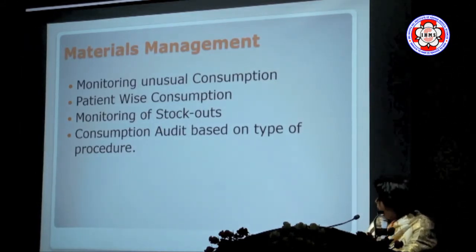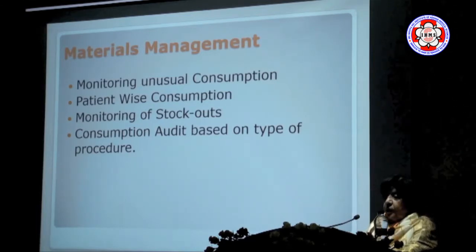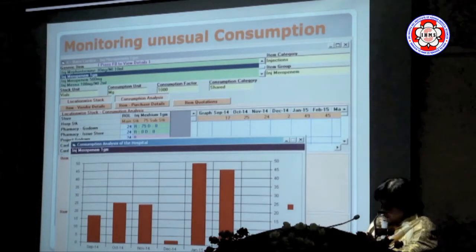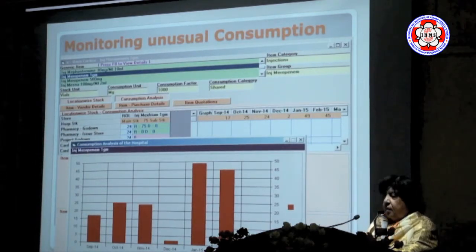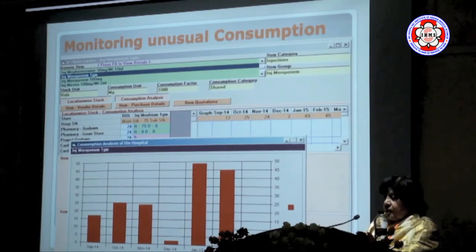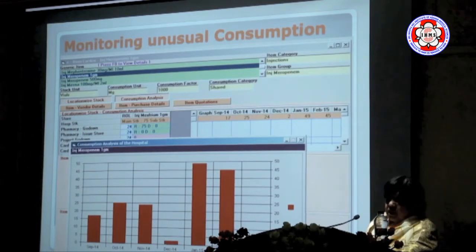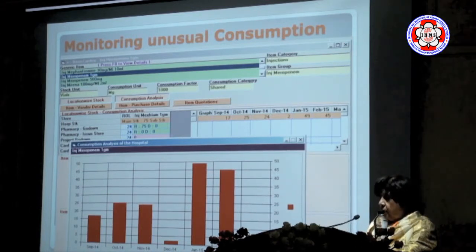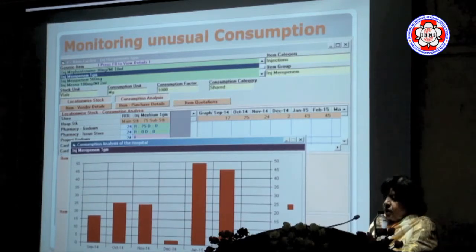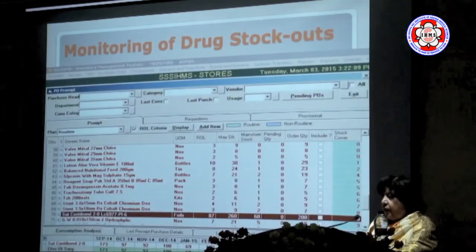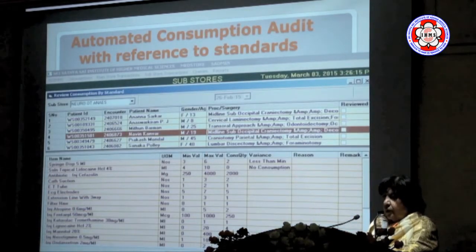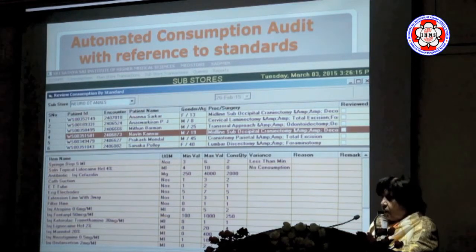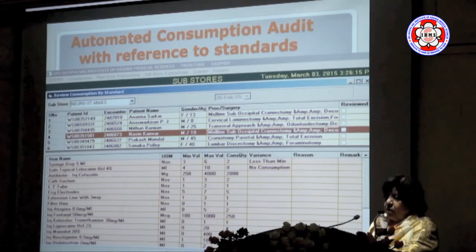Material management is very important. We are working on a program where we have set standards for every procedure, where consumption is recorded, consolidated, and any unusual consumption is flagged. We fix a range between minimum and maximum, and when there is a spike, the reason for that consumption is analyzed. At the same time, it gives me a chance to verify that the registered consumption actually occurred — cases of wrongly registered consumption are also checked and monitored on a regular basis.